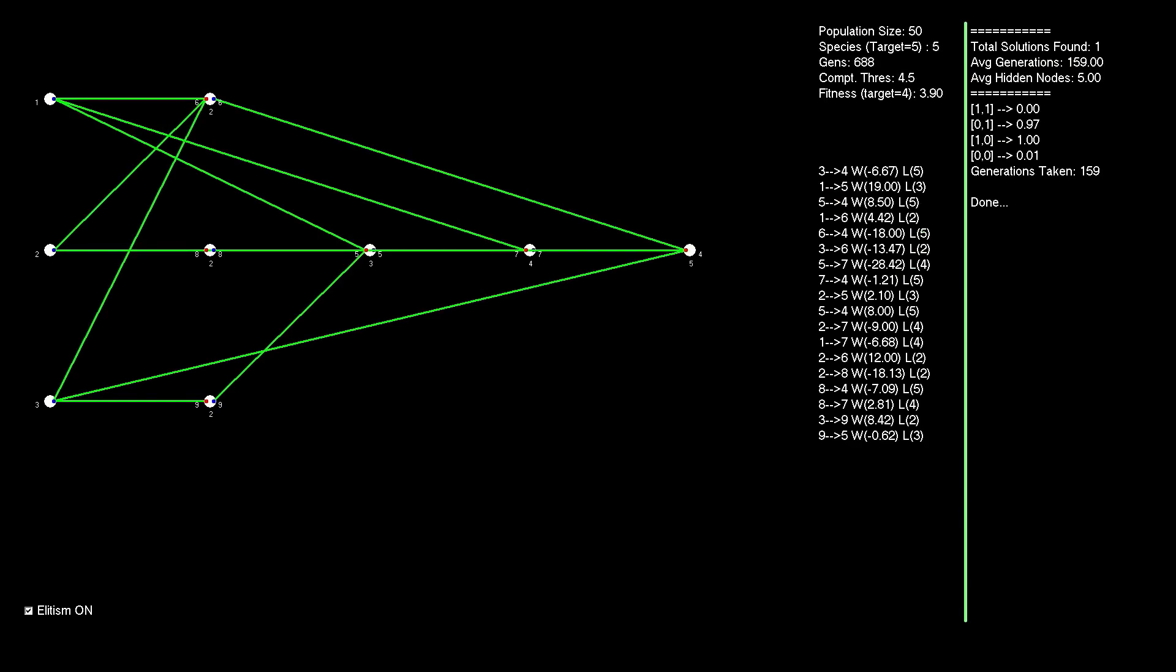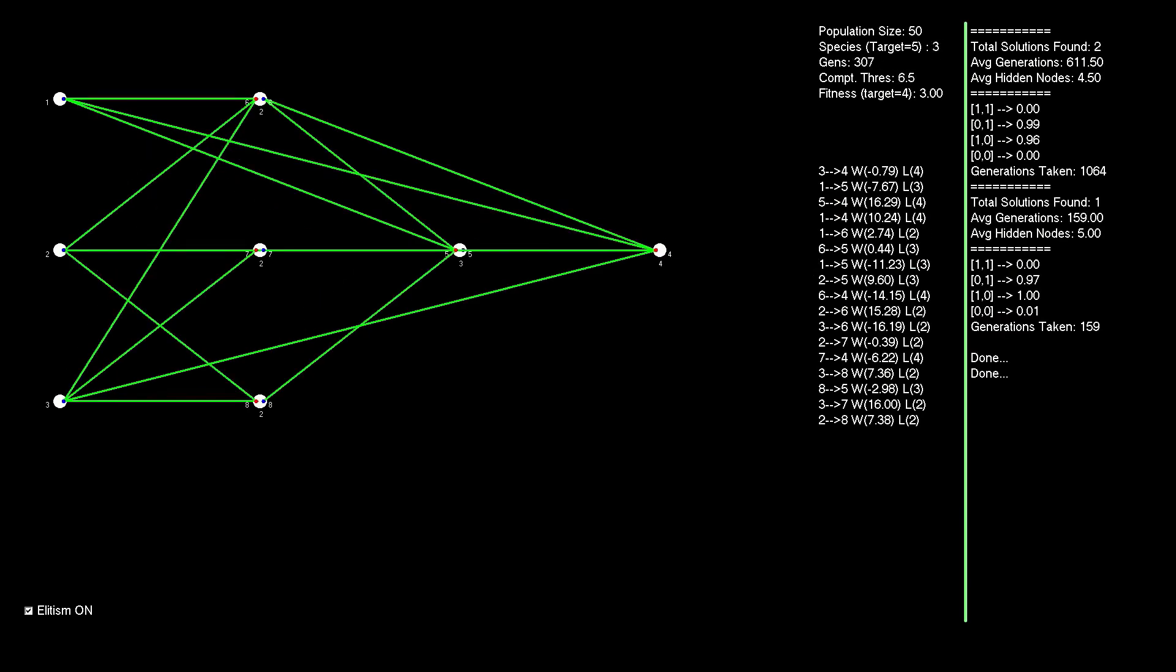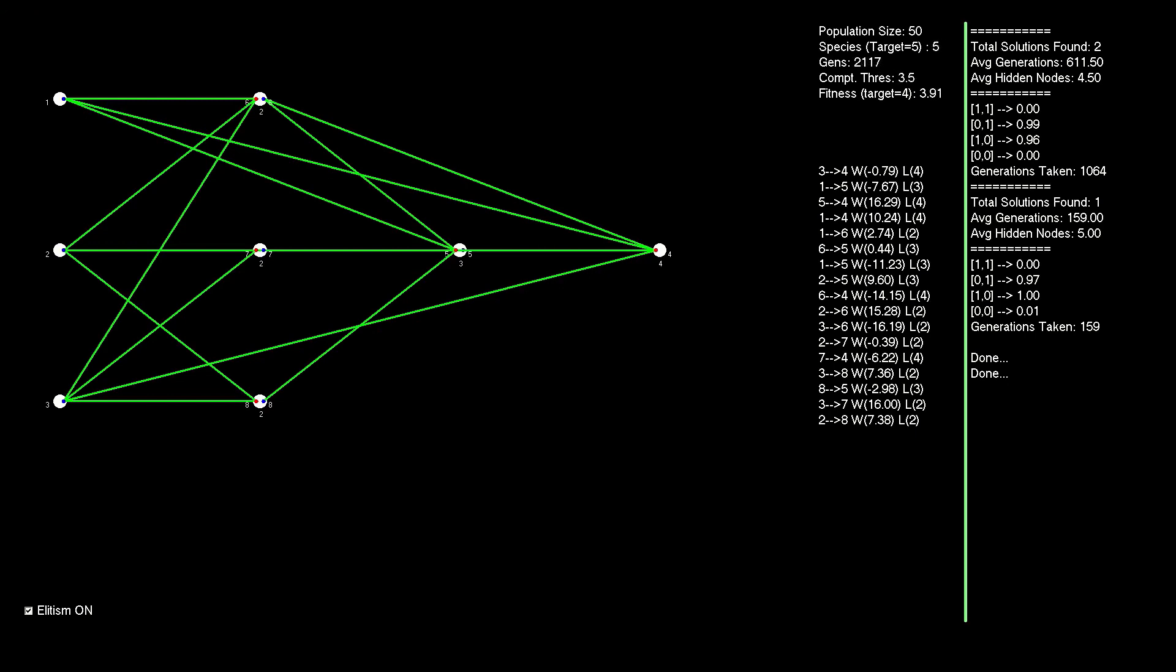So with speciation complete, it's now time to produce the next generation by selecting two parents from within a species and performing the crossover function. So if you're interested in seeing that, you know what to do. As always, thanks for watching.